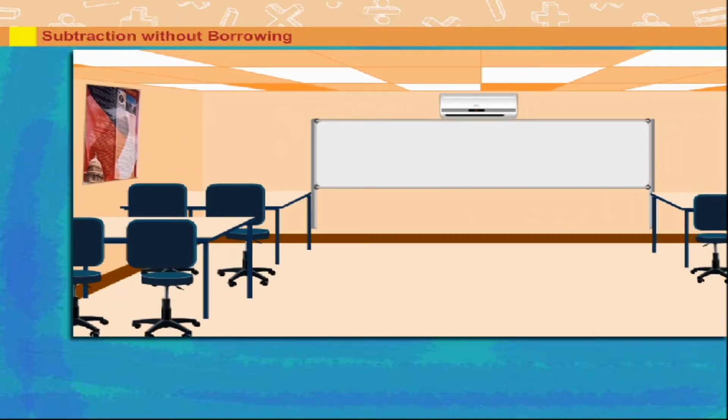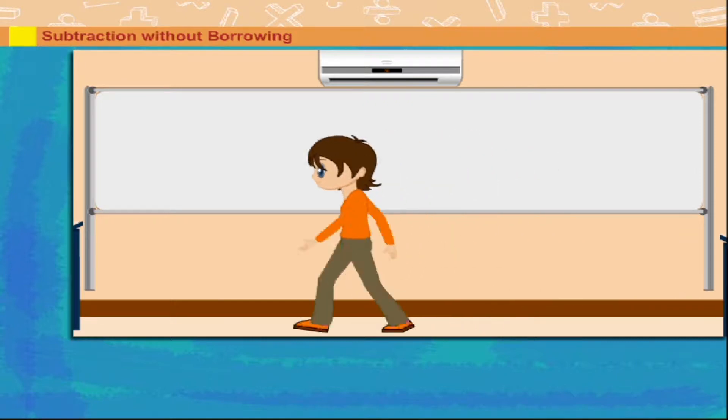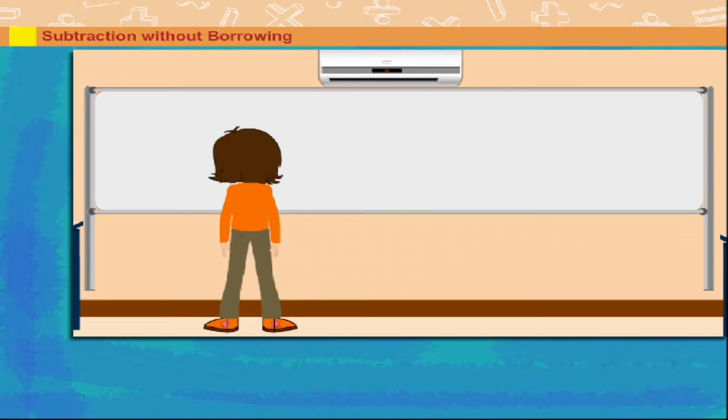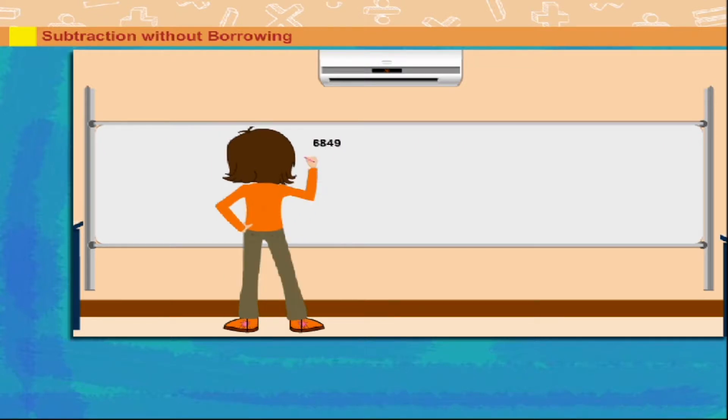Subtraction without borrowing. Dilby walks in the class with a question in her mind. She moves to the board and writes her question. How much is 6,849 minus 3,217?